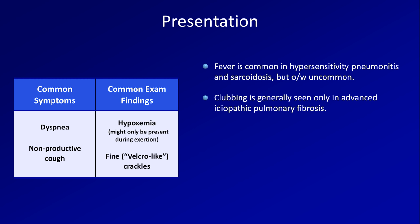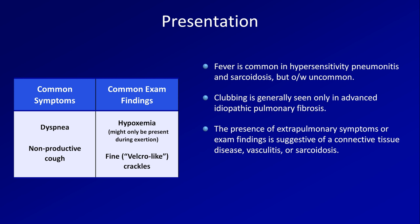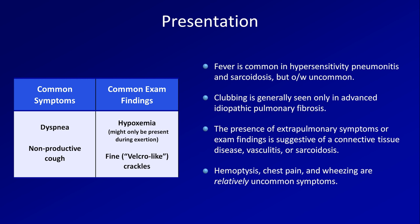Clubbing is generally only seen in advanced idiopathic pulmonary fibrosis, and if observed in a patient with relatively mild ILD, it should prompt an investigation for a possible lung malignancy. The presence of extrapulmonary symptoms or exam findings is suggestive of a connective tissue disease, vasculitis, or sarcoidosis. Hemoptysis, chest pain, and wheezing are all relatively uncommon symptoms, though they certainly can occur — for example, hemoptysis is a well-described presentation of granulomatosis with polyangiitis.